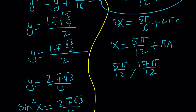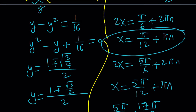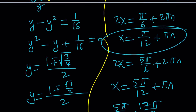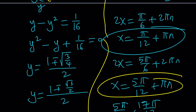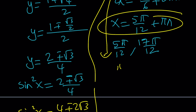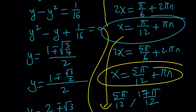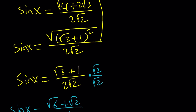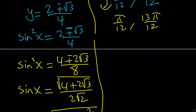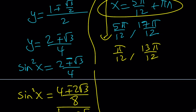With the first branch, we get x equals π/12 and π plus π/12 equals 13π/12. So the full set of solutions is x equals π/12 plus πn and x equals 5π/12 plus πn — the same solutions we found in method 2a.